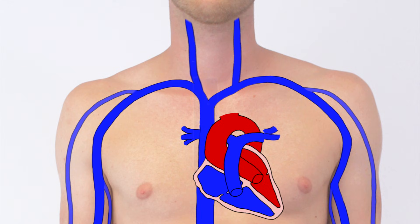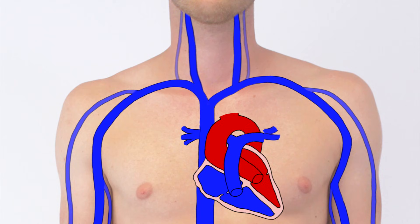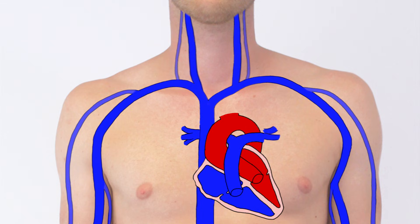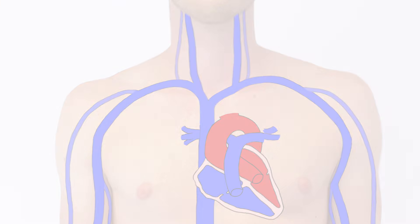The right-sided internal jugular vein is best for conducting this procedure since it is directly connected to the right atrium. The exam can also be performed on the external jugular veins, but they often branch at right angles which can interfere with the test results. However, in this video, the external veins are used to perform the examination since their superficial course and good visibility allow for the best demonstration of the technique.